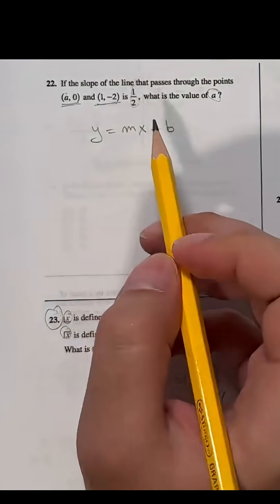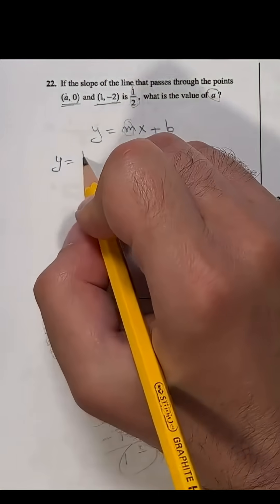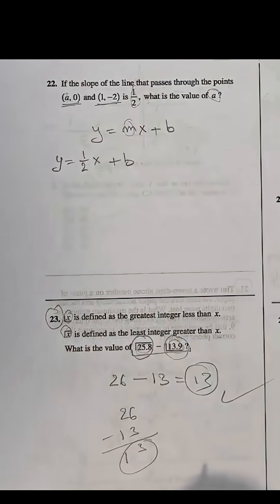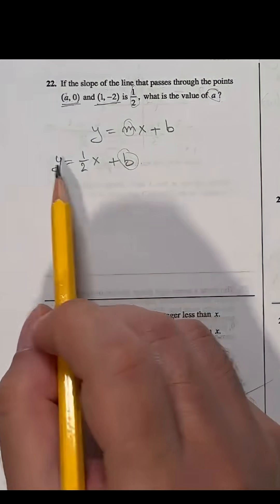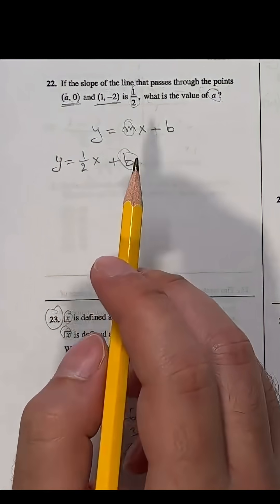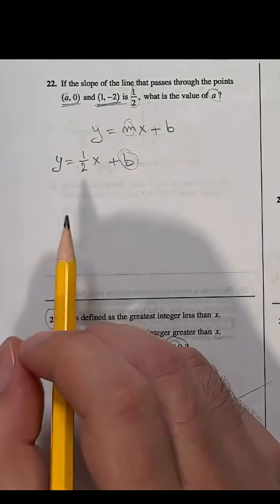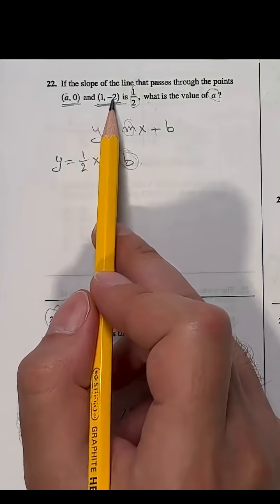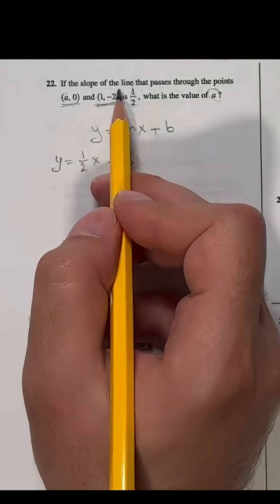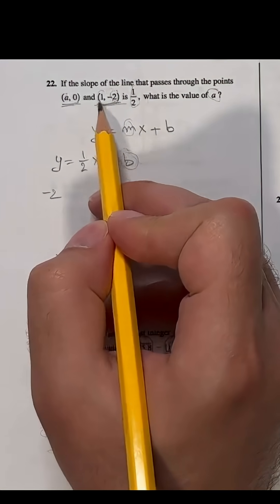We are already given the slope which is 1 over 2, so the equation now is y equals 1 over 2x plus b, and we need to find b. To find b we're going to use the point (1, -2). It's our only way to find b because this point is given numerically, while the point (a, 0) will lead to an equation of two unknowns.